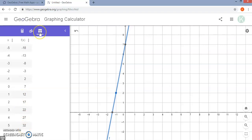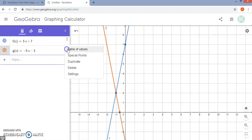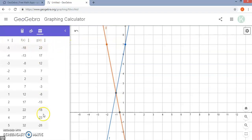You can also add a second function and do the same thing. When it creates the table, it will just add another column to the side. So you can use this feature similar to using a table feature in a graphing calculator.